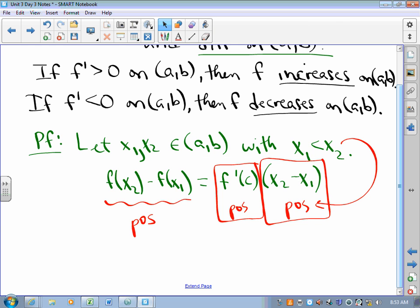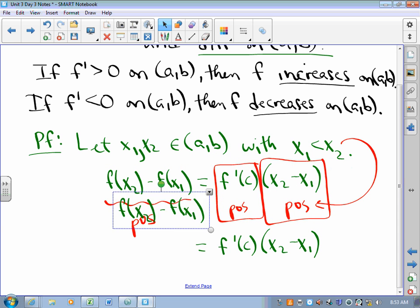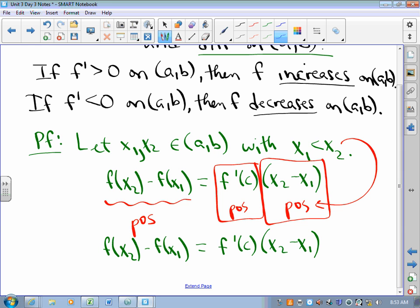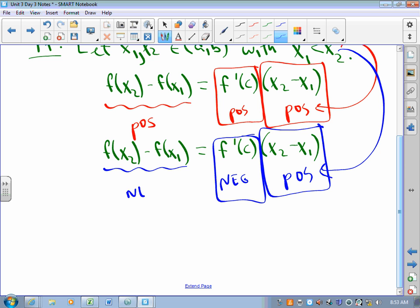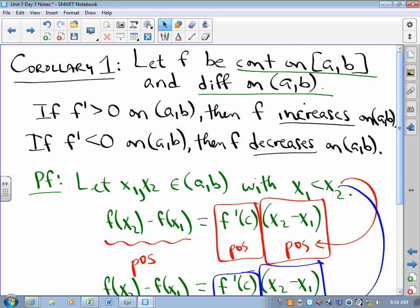Similarly, what if F prime of C is negative? If that's negative, this is still positive. And so this must be negative. And what would it mean for that to be negative? It would mean that F of X2 is less than F of X1, which means the function is going down as we read from left to right. So one of the big consequences of the mean value theorem is our test for increasing and decreasing functions.